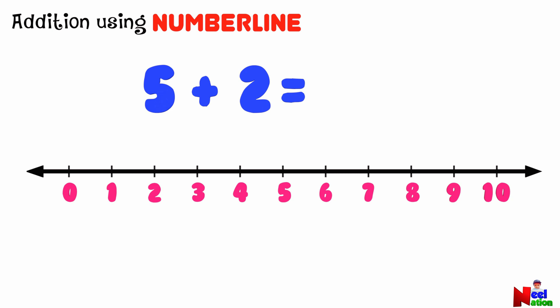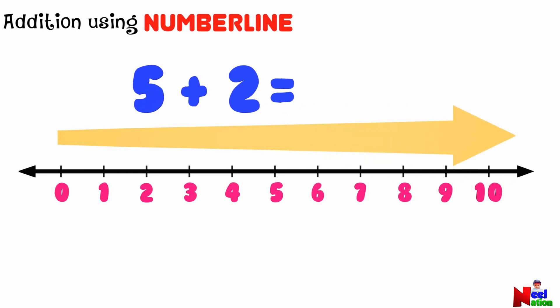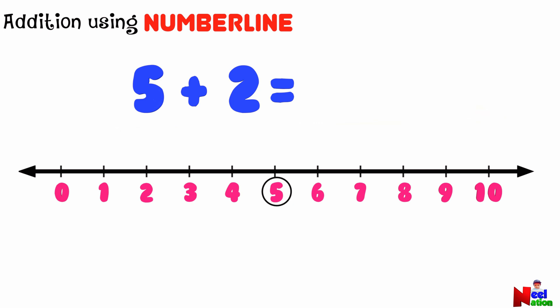To add numbers using number lines, you always move forward to the right. Can you find the number five on the number line? To add two more to number five, let's make two jumps to the right. After five, we jump to six and then seven. We have landed on number seven. So five plus two equals seven.